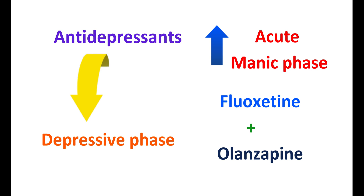In summary, lithium is the first-line drug for treatment of mood swings in bipolar disorder and schizoaffective disorder. Anticonvulsants like valproate, divalproex, and lamotrigine are used as alternatives to lithium. That's all about the different types of mood stabilizers — thanks for watching this video.